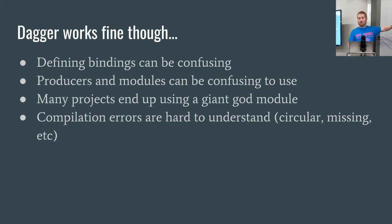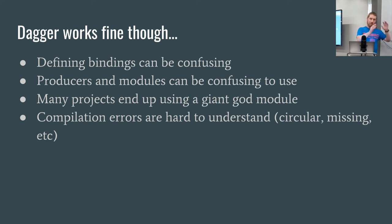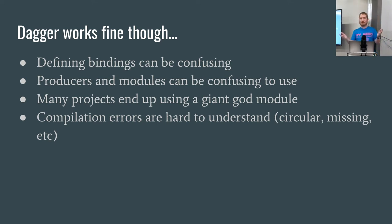If anybody's used Dagger, you've definitely hit this: when you make a mistake, Dagger does not help you. It's just like, you broke the project, good luck. Sometimes it gives a slightly helpful error, but usually you get 400-line stack traces of nonsense. And it's not your code that broke — it's the compiled or generated code. The engine that generates the code broke and then you're left wondering what the real reason is.